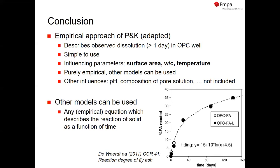This is just an example of another model you might want to use. Here we have fitted the reaction of a fly ash just using a simple equation, and then we told GEMS the amount of fly ash reacted as a function of time. You can see the fly ash reaction is much much slower than the clinker reaction.